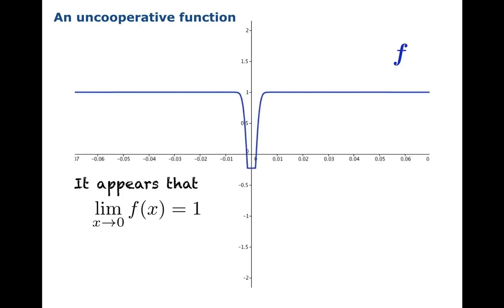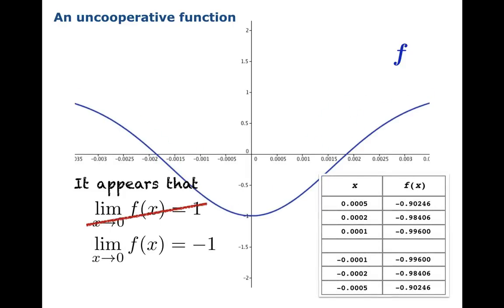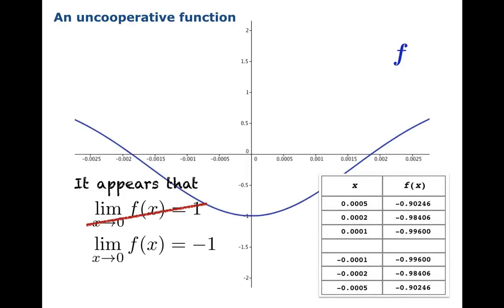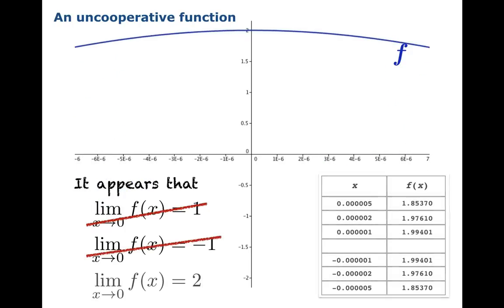But then a funny thing happens. As we continue to zoom in, the bottom seems to drop out of the function. And now, you can make the case that it appears the limiting value as x approaches 0 is negative 1. But then, if we zoom in further, suddenly, we start coming to the opinion that perhaps this limiting value as x approaches 0 is 2. Now we really don't know what's going on. Is it the case that as we continue to zoom, we're surprised by more jumps in the apparent limit?